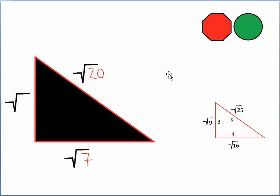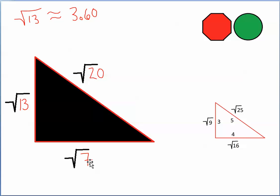Let's see if you can work this one. I know the length of the hypotenuse and the length of one of the legs. If I know the hypotenuse and one leg, I take the number under the hypotenuse's square root sign and subtract the number under the leg's square root sign. I'm not subtracting the square root of 16 from the square root of 25 — I'm subtracting the number 16 from the number 25, giving me 9. So 20 minus 7 is 13, and the square root of 13 is 3.60 correct to two decimal places. That trailing zero is important — it tells the reader you are giving information correct to two decimal places.